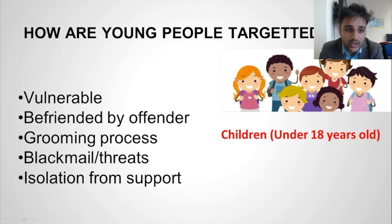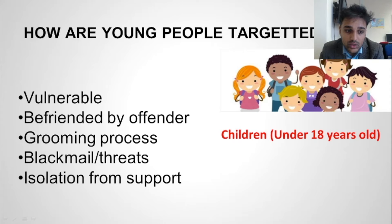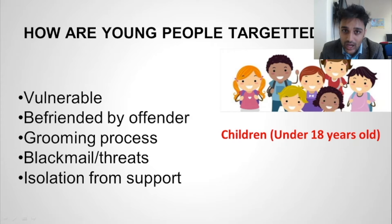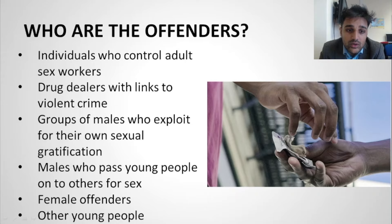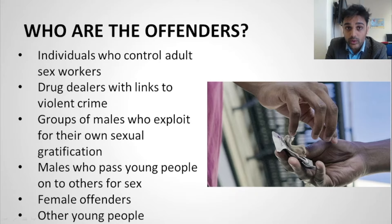How are young people targeted? They are vulnerable. They are befriended by the offender through a grooming process — given food, sweets, money. There's blackmail and threats: 'If you tell your parents, I'm going to come and find you.' Isolation from support: 'Don't listen to your mum and dad, listen to me, I'll look after you.' Who are the offenders? Individuals who control adult sex workers, drug dealers with links to violent crimes, groups of males who exploit for sexual gratification, males who pass young people on to others for sex, female offenders, and other young people.